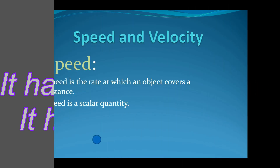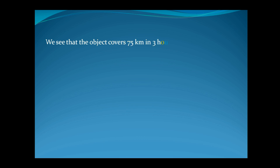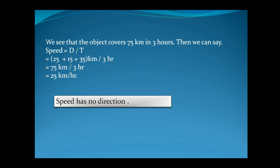Suppose an object covers distances of 25 km, 15 km, and 35 km. The object covers a total of 75 km in 3 hours. So speed equals total distance divided by time: 25 + 15 + 35 divided by 3 hours equals 75 km by 3 hours, which is 25 km per hour. It has no direction, so speed is a scalar quantity.